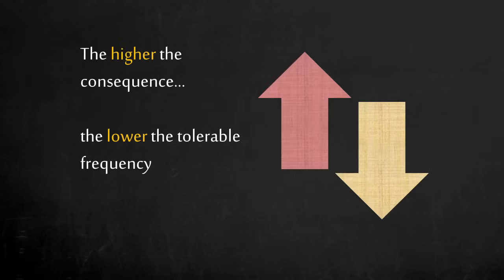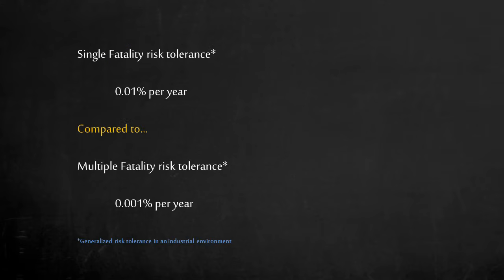The rationale is simple. The higher the consequence, the lower the tolerable frequency. Generally, industry accepts a 0.01% chance of a single fatality in a given year. In other words, the chance of fatality is 1 in 10,000 for an individual per year.